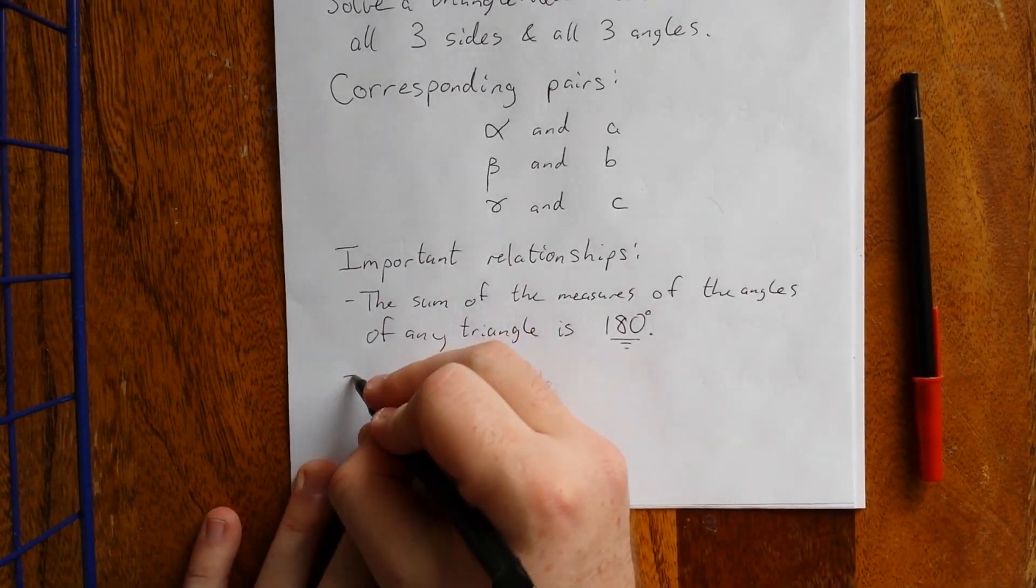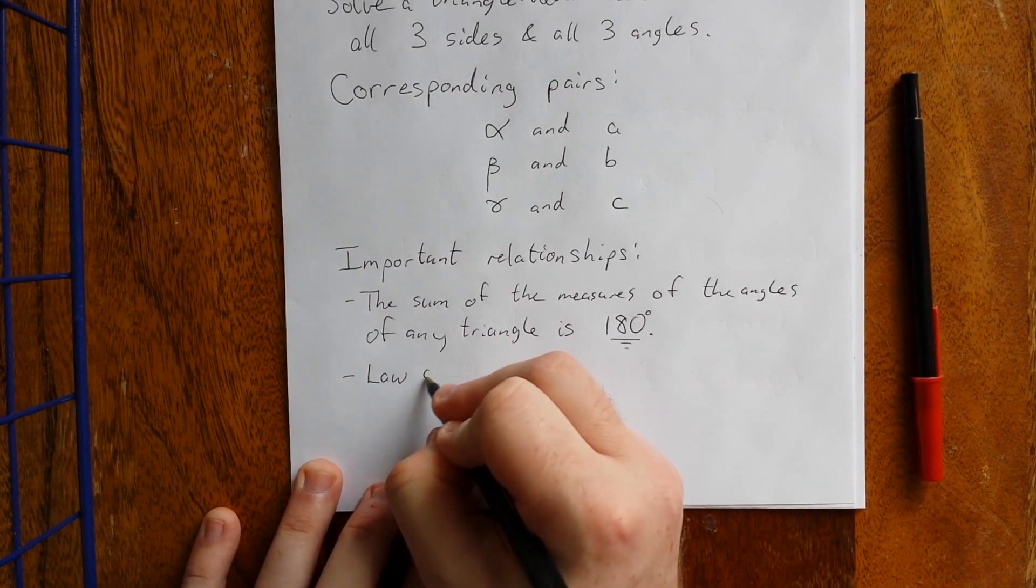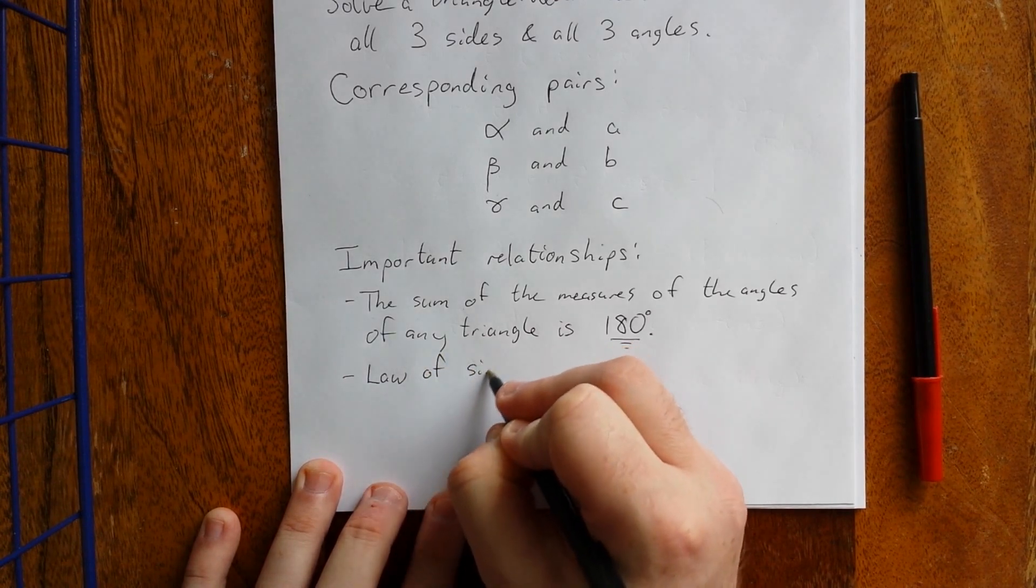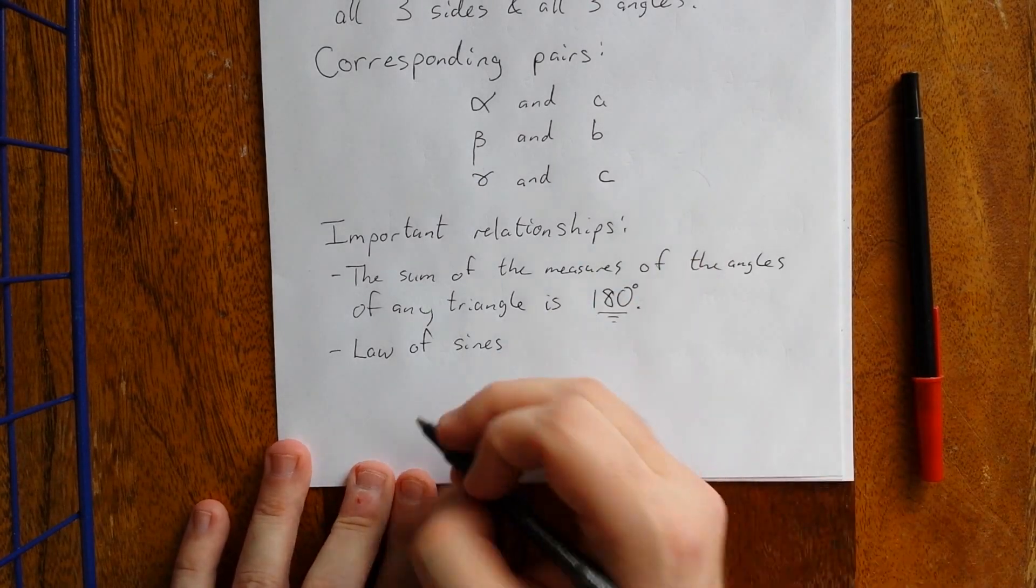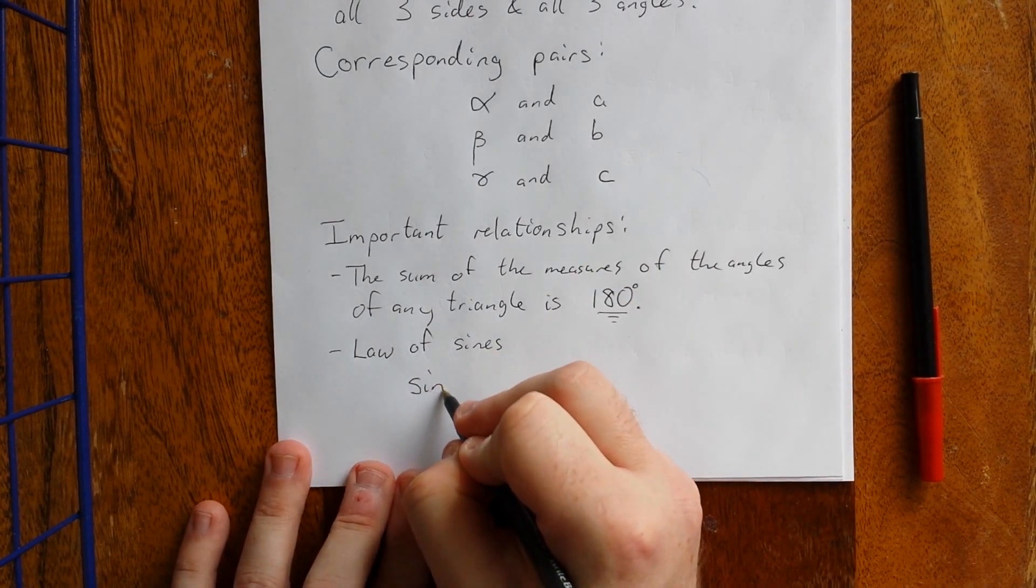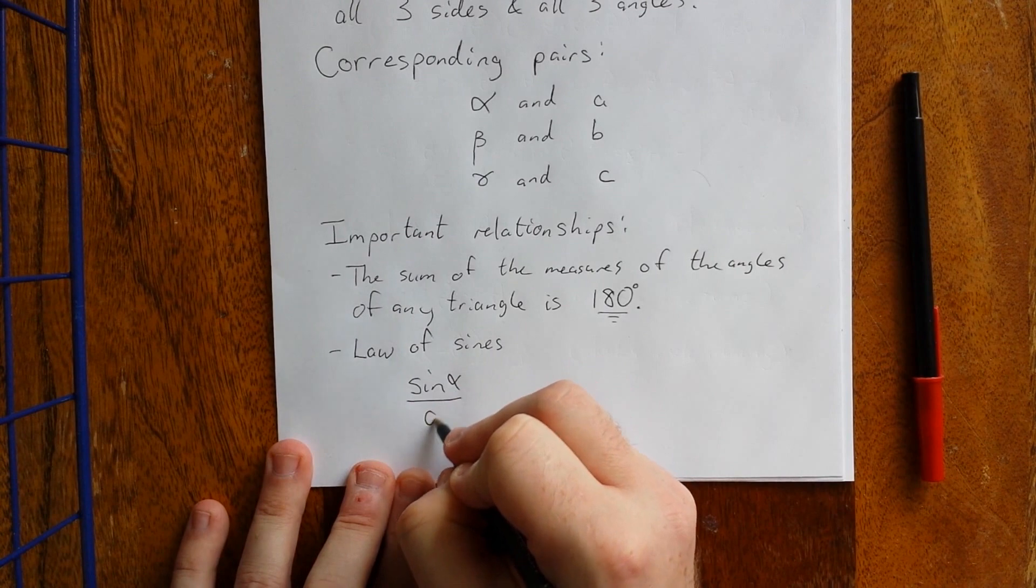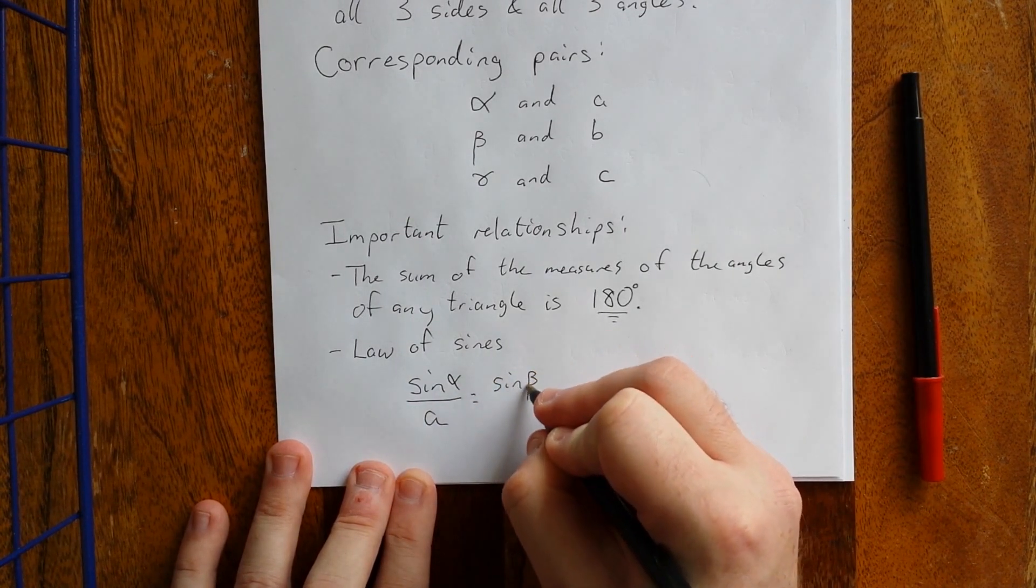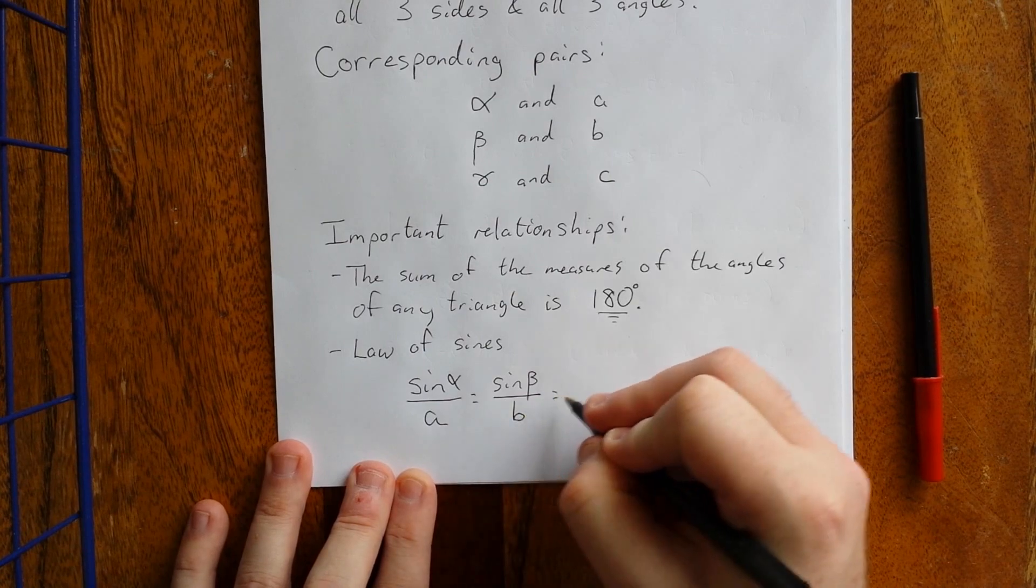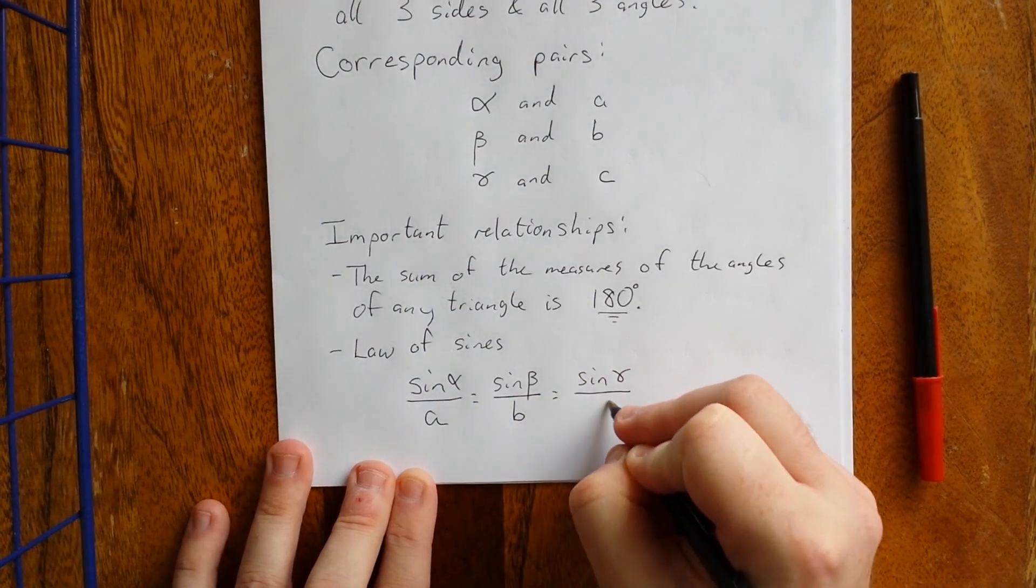Next really important relationship is referred to as the law of sines. The law of sines is going to be used when we start solving these triangles. The law of sines states that sine of alpha over A is equal to sine of beta over B, but that's also equal to sine of gamma over C.